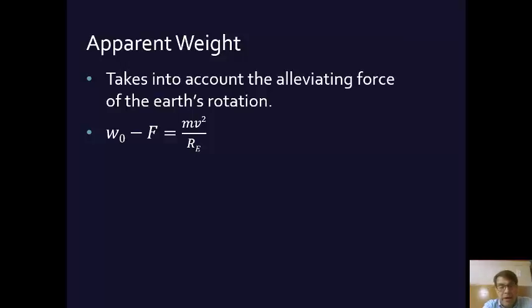He does a little algebra. He divides both sides by M of equations that have already been established. Again, I didn't think it was important to go into all the proof of how he gets here. But he ends up, basically, with an equation that says that the true weight minus the force that has to do with the rotation is going to equal the mass times the velocity squared, divided by the radius of the Earth, if you're standing on the surface of the Earth.